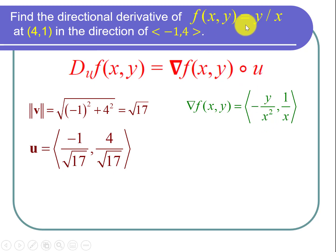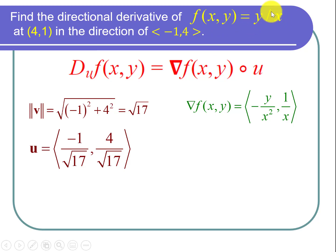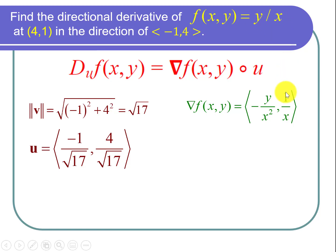Now let's find f sub y, the derivative with respect to y. f is y over a constant because x is now thought of as a constant. The derivative of y over a constant with respect to y is just 1 over that constant, or 1 over x. So the gradient is the vector negative y over x squared comma 1 over x.